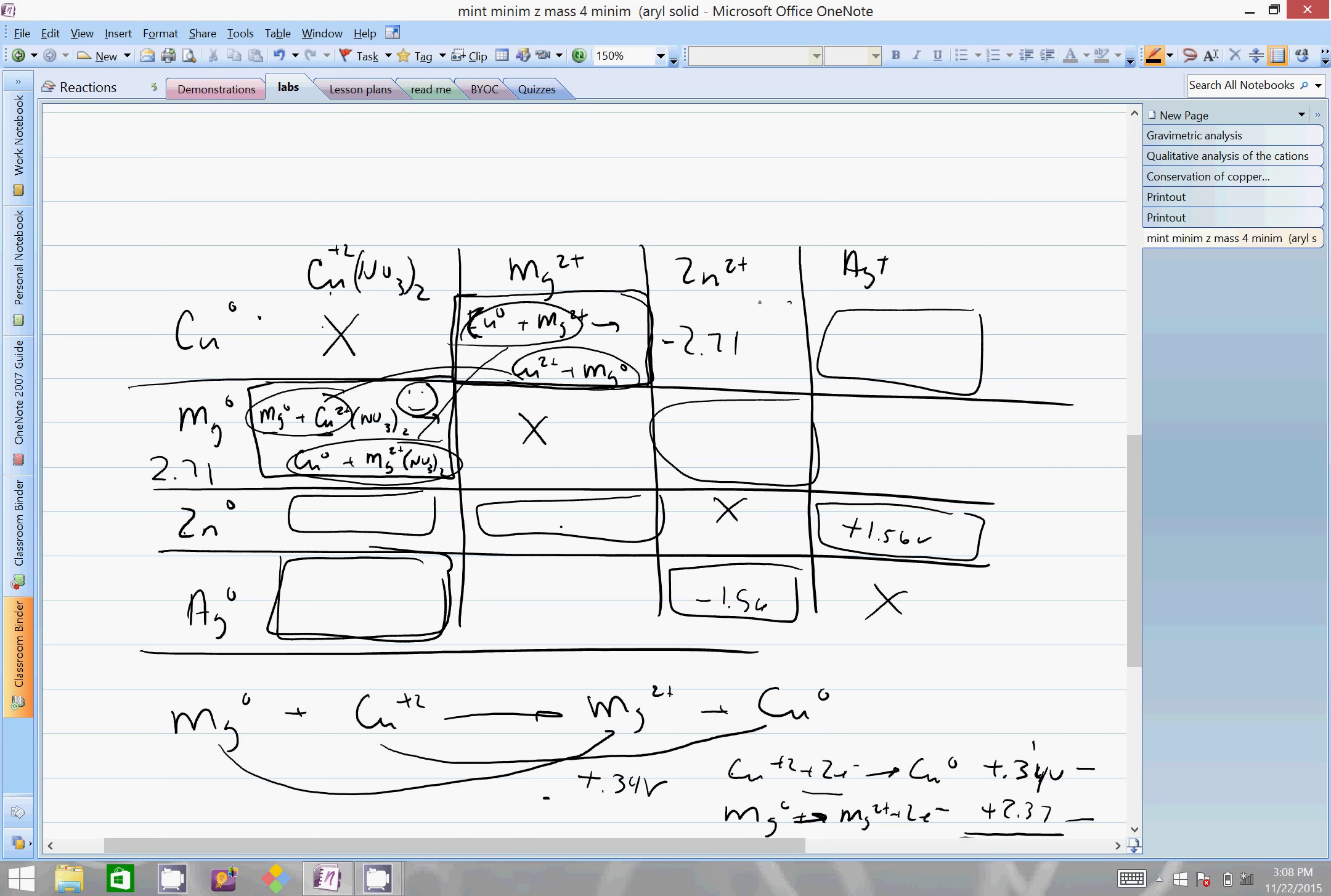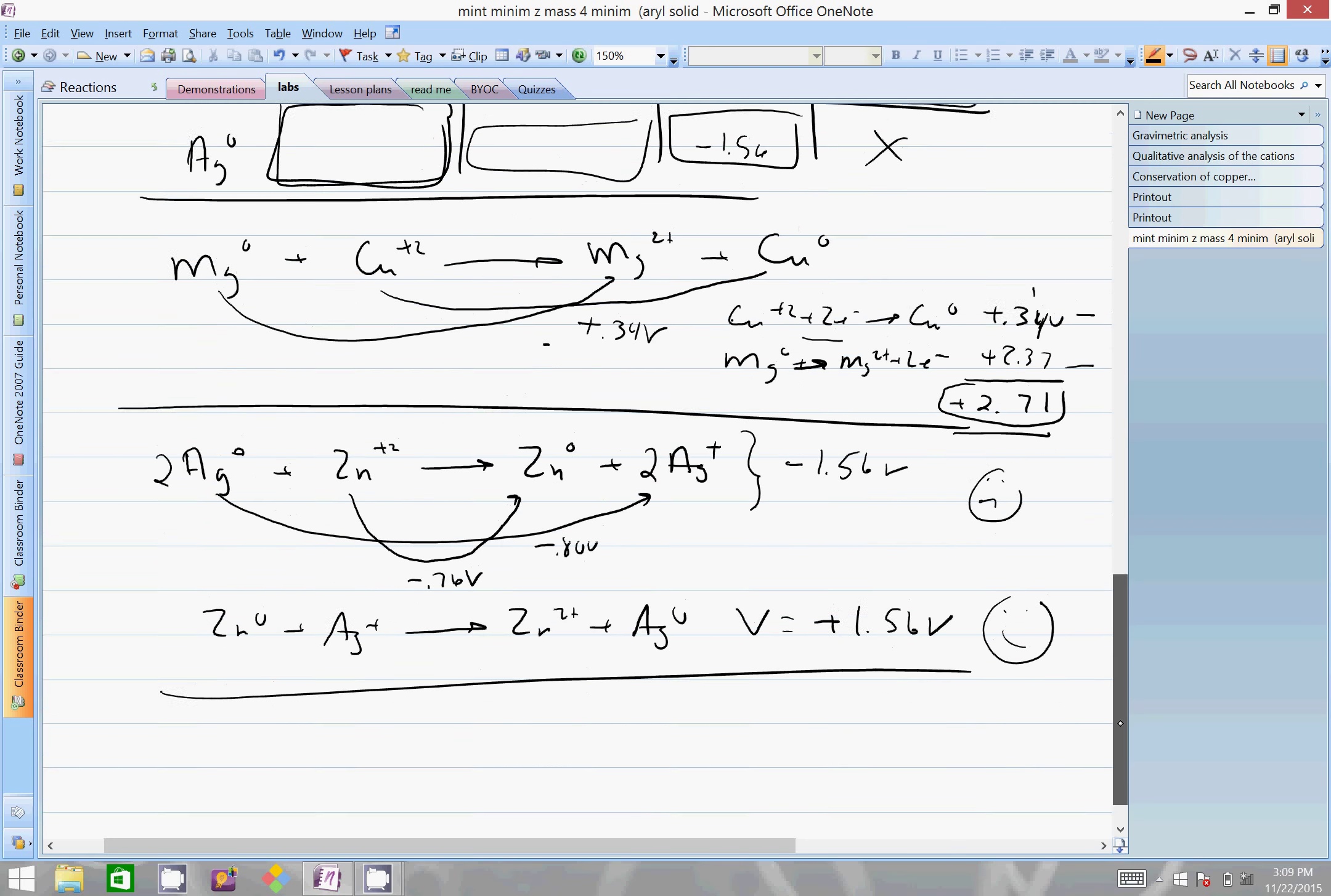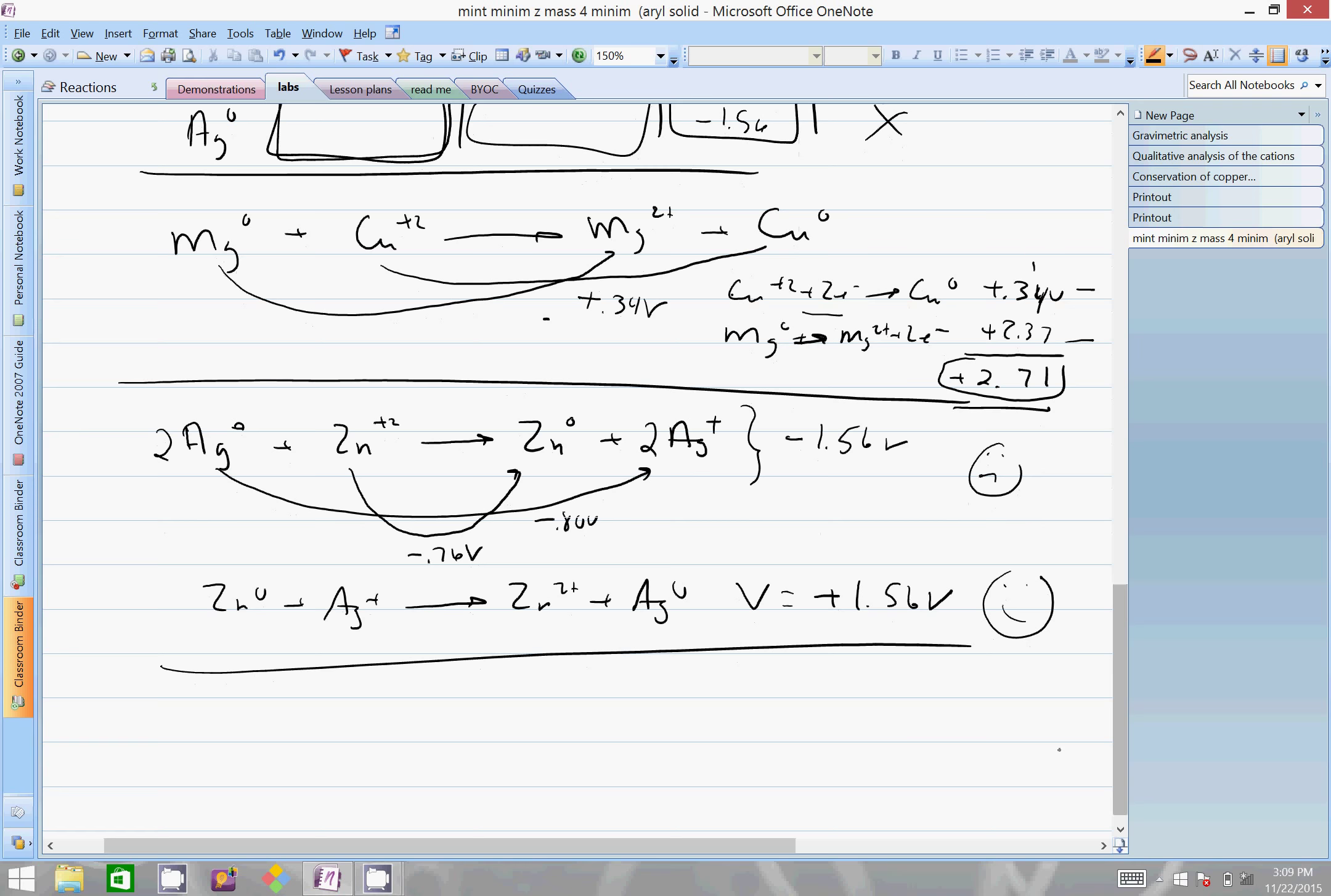Fill the rest of them in by simply listing out your reactions on a sheet of paper. We should have a nice data table with positive and negative values predicting whether or not a reaction will take place or not.